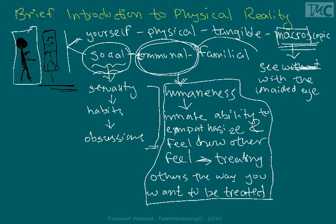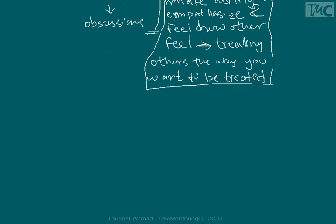Familial reality: we see our parents, our siblings, our relatives, and we identify and define ourselves. And again, these are all interchangeable — very, very interchangeable. They are not mutually exclusive, not at all.